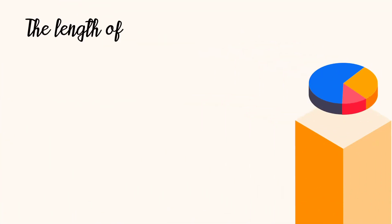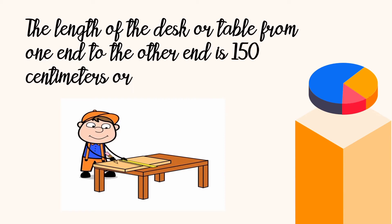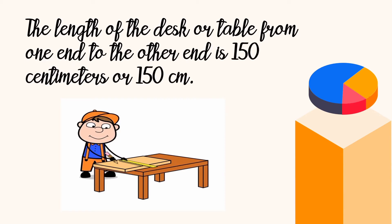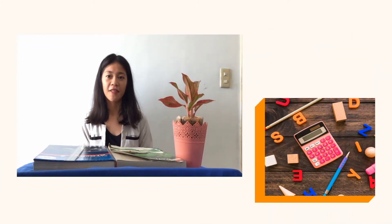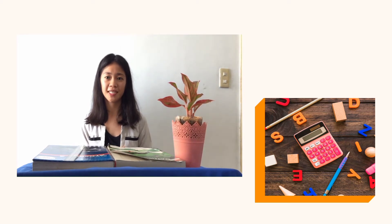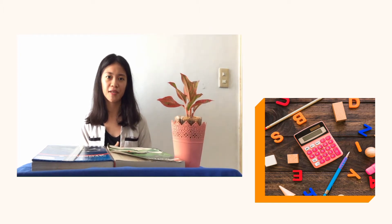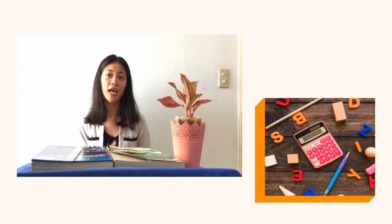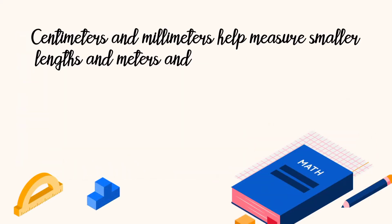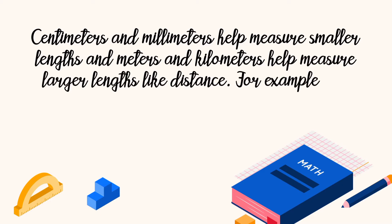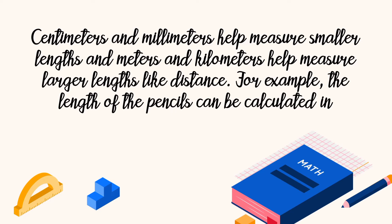Another example would be the length of the desk or table from one end to the other end, which measures 150 centimeters or 150 cm. Let us now proceed to the different units of length. The standard unit of length based on the metric system is a meter. According to the length that needs to be measured, we can convert a meter into various units like millimeters, centimeter, and kilometer.